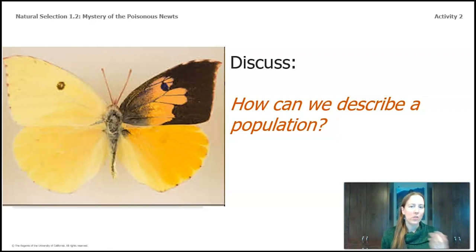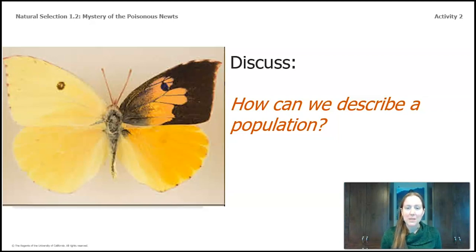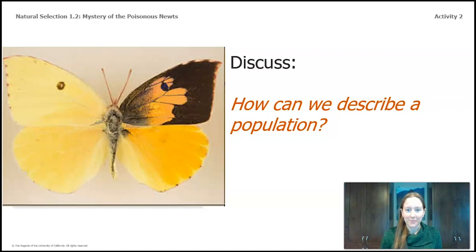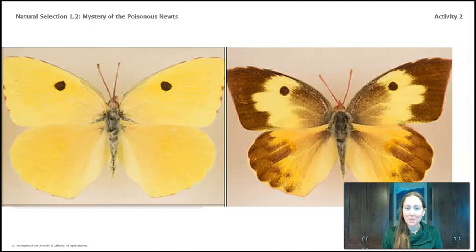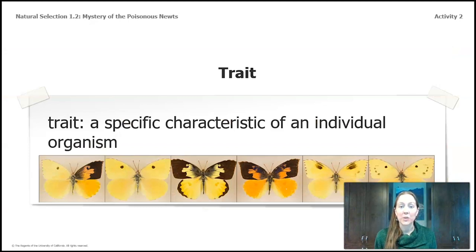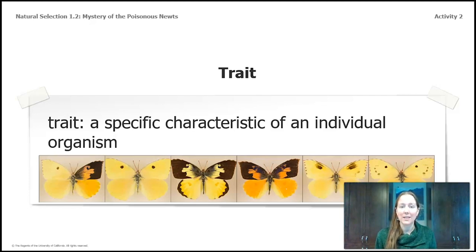I'm going to give you two more butterflies. Discuss with whoever you're talking with — how can we describe the population by looking at these butterflies? What similarities and differences do you notice? This leads us to our second important word: trait. A trait is a specific characteristic of an individual organism. When we look at these butterflies' wing color, some have solid pale yellow, some have solid darker yellow, and some have yellow and brown — those are the traits of the individuals in this population.